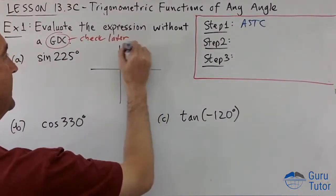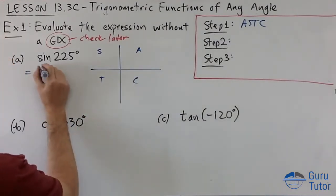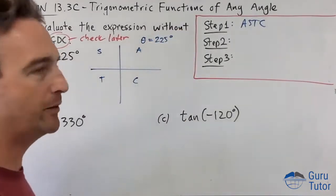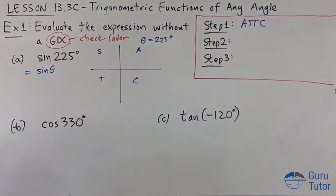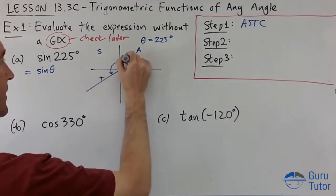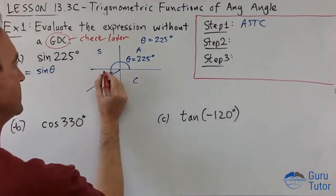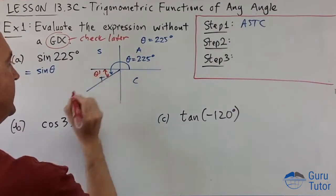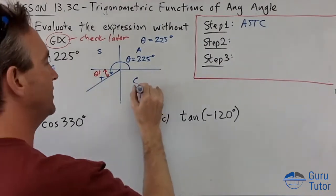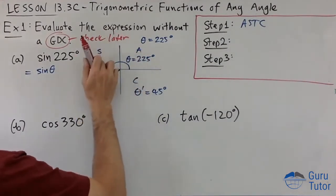We look at this and do ASTC. We're thinking sine(θ) where θ is 225°. So where is θ? This is where standard position comes back: 0°, 90°, 180°, 270° — 225° is over here somewhere. θ is 225°. Now we need our reference angle θ-dash, which is always to the horizontal. So 180° plus what gives 225°? θ-dash is going to be 45°.